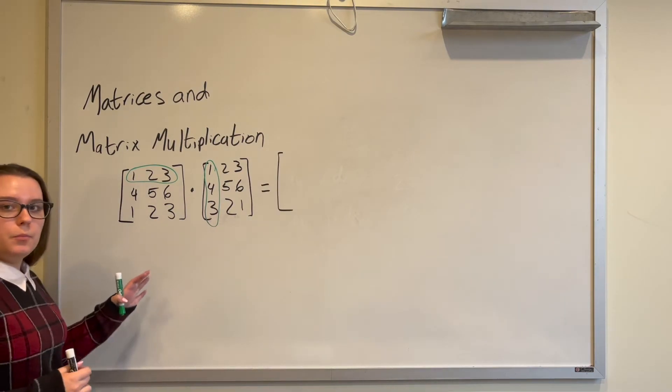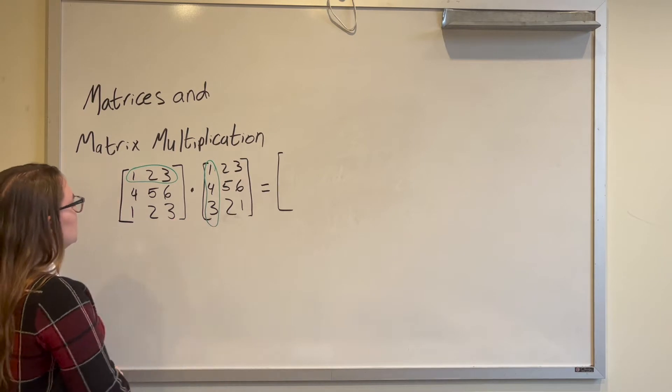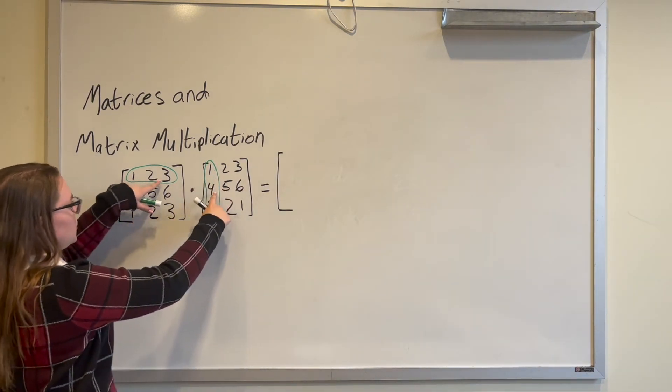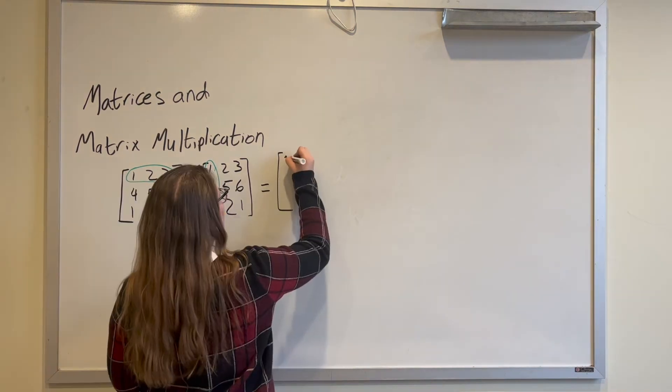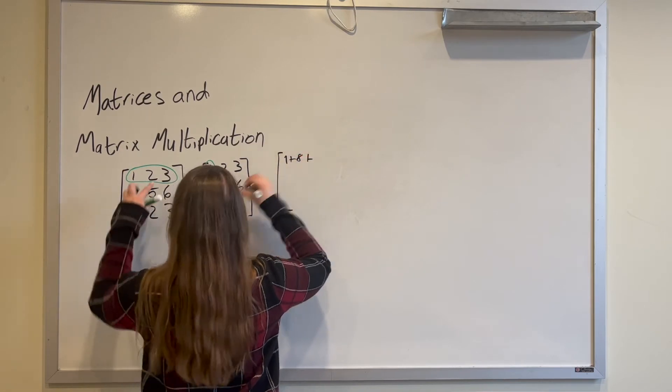So when we do this we're kind of taking the dot product of these two and treating them as vectors. So we're going to take 1 times 1 plus 2 times 4 plus 3 times 3. 1 plus 8 plus 9.